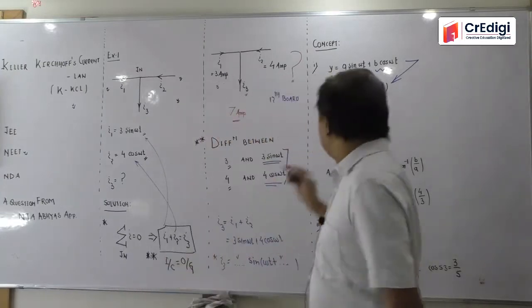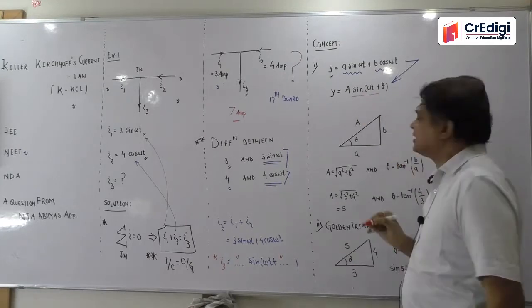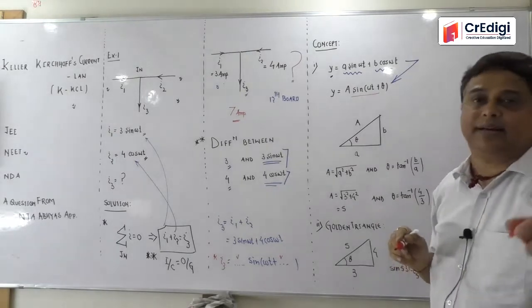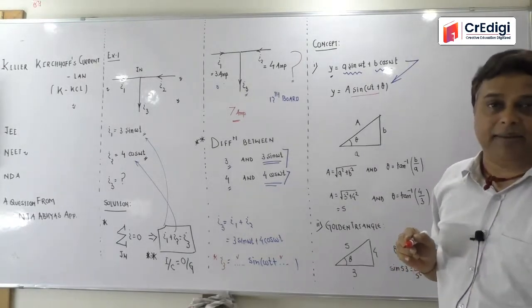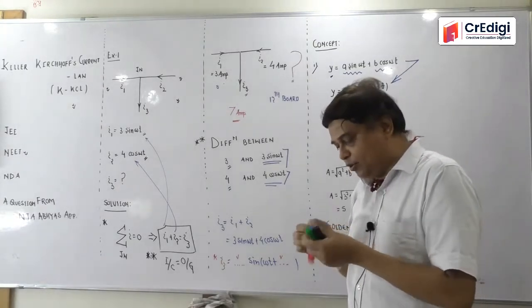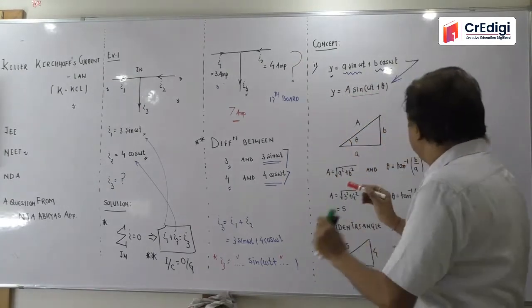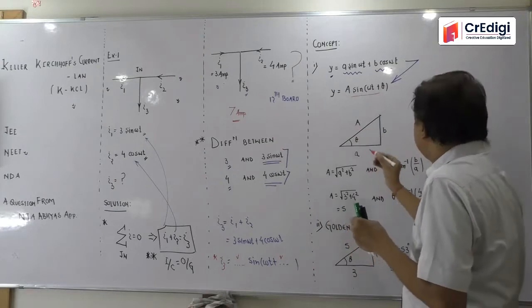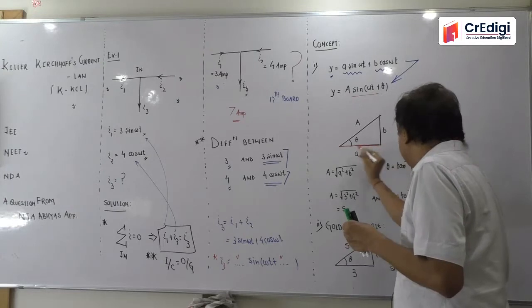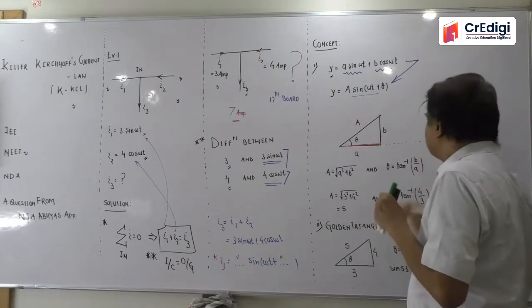So capital A is unknown. I gave you a sin omega t plus b cos omega t will be equals to capital A sin omega t plus theta. I gave you this and I also gave you that you should have to go through it. You have to use it directly because of the fact that you don't have much time. This is the zero degree line, be careful. This is the zero degree horizontal.